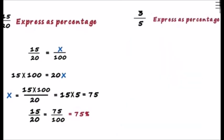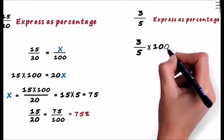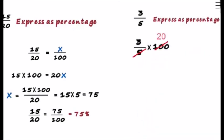Let's express 3 by 5 as a percentage. To convert 3 by 5 as percentage, we have to multiply it by 100. 5 times 20 is 100 and 20 times 3 is 60.